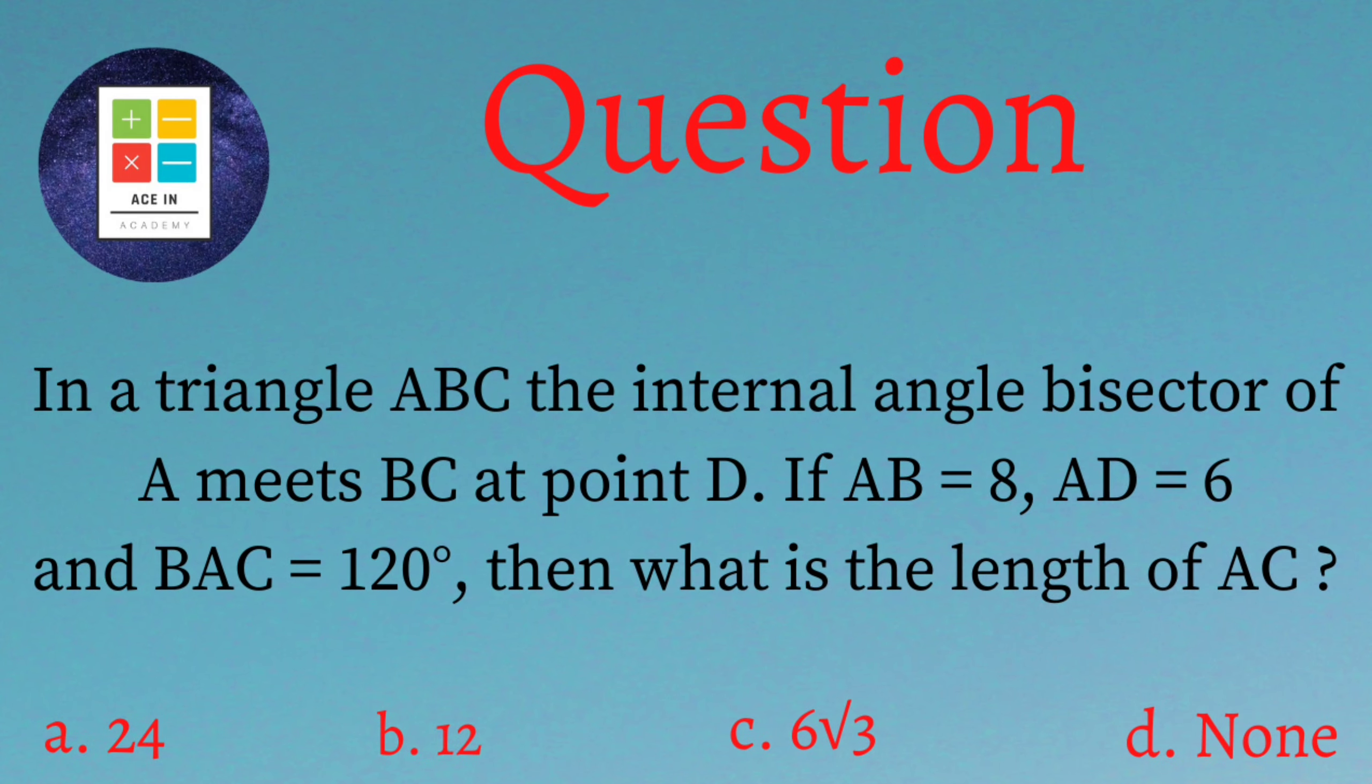In a triangle ABC, the internal angle bisector of angle A meets BC at point D. If AB is equal to 8 centimeter, AD is equal to 6 centimeter, and angle BAC is equal to 120 degrees, then what is the length of AC?